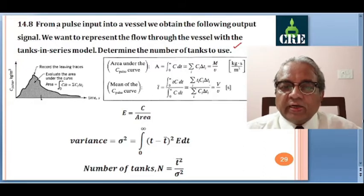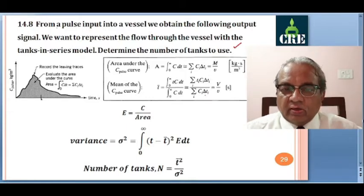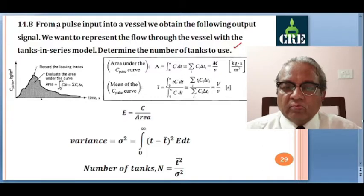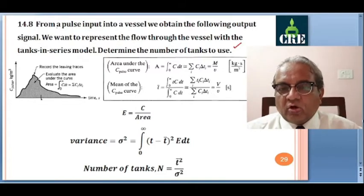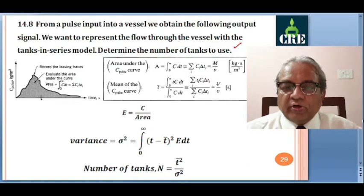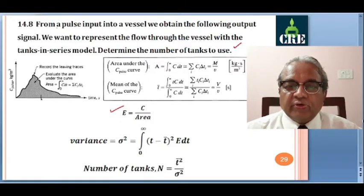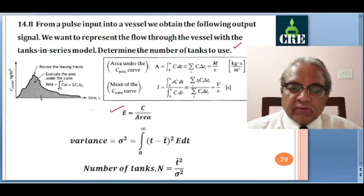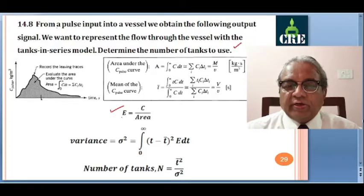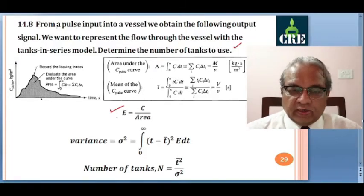The mean time T̄ is found from pulse input data as ∫T·C dt / ∫C dt, or in discrete form Σ Tᵢ Cᵢ ΔTᵢ / Σ Cᵢ ΔTᵢ. If ΔTᵢ is equidistant — readings every minute, every 5 or 10 minutes — the interval cancels and you just use Σ Tᵢ Cᵢ / Σ Cᵢ. T̄ equals V/v. For the E-curve, each C value is divided by the area ∫₀^∞ C dt, giving E values that are then plotted.